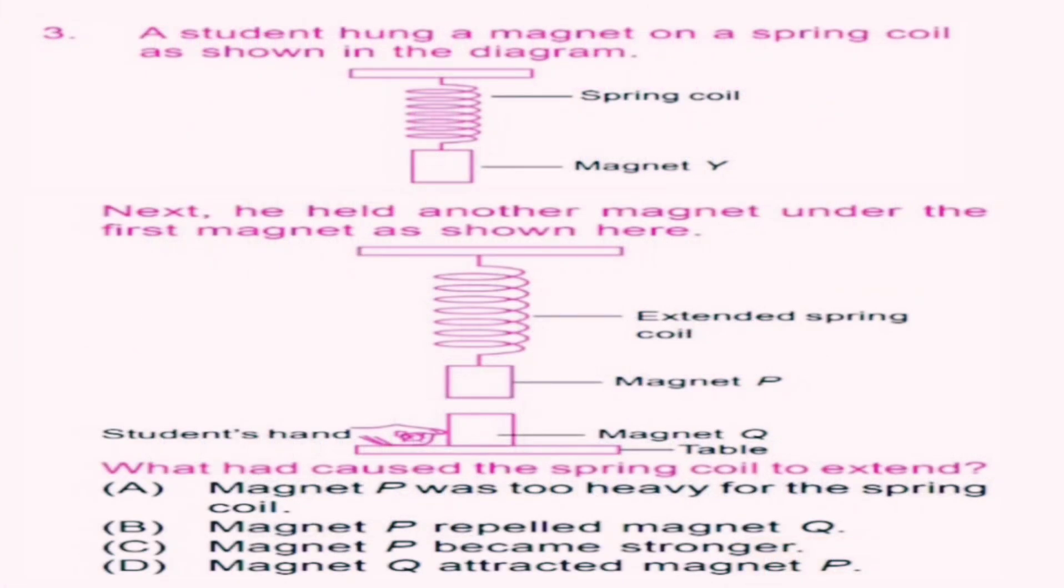Question number 3. A student hung a magnet on a spring coil as shown in the diagram. Next, he held another magnet under the first magnet as shown here. What had caused the spring coil to extend? Option A, magnet P was too heavy for the spring coil. Option B, magnet P repels magnet Q. Option C, magnet P became stronger.